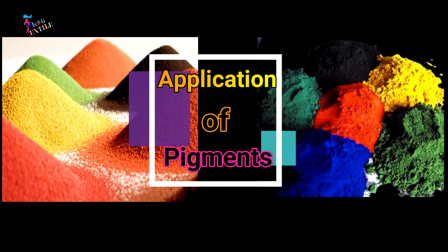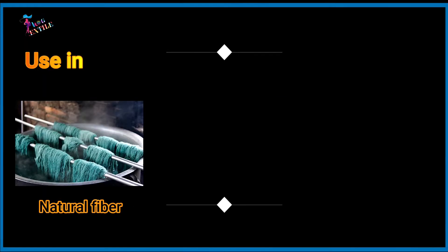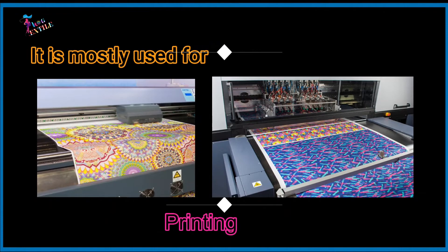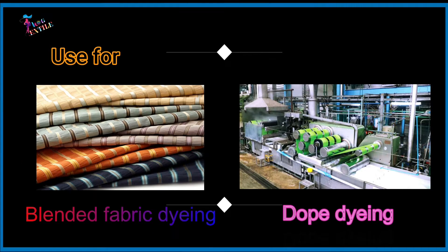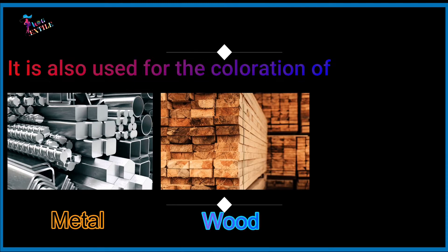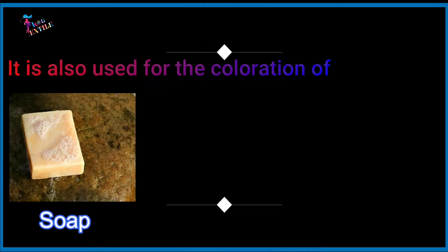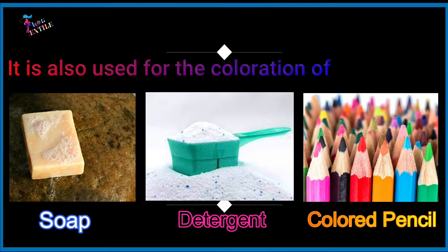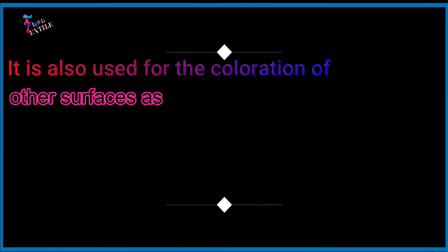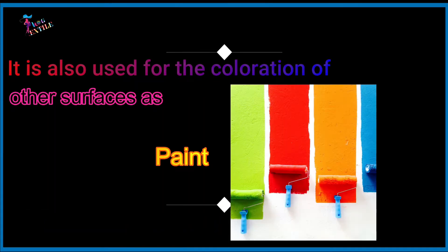Application of pigments. Pigments are used in natural, synthetic, and glass fiber dyeing. They are mostly used for printing. Pigments are used for blended fabric dyeing and dope dyeing. They are also used for the coloration of metal, wood, stone, soap, detergent, colored pencil, PVC, rubber, paper, and other surfaces as print.